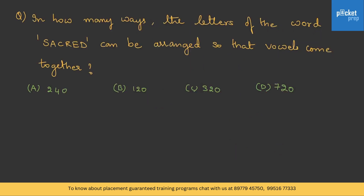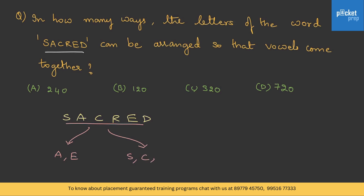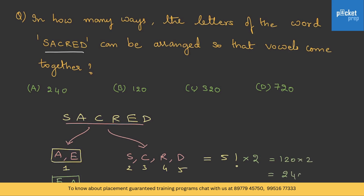Here is a question: in how many ways can the letters of the word 'SACRED' be arranged so that vowels come together? The letters are S, A, C, R, E, D. The vowels are A and E, and the rest are S, C, R, D. Treating A and E as one single object gives us 5 objects total, arrangeable in 5! ways. But A and E themselves can be ordered as AE or EA — 2 possibilities — so we multiply by 2. The answer is 5! × 2 = 120 × 2 = 240. That is option A.